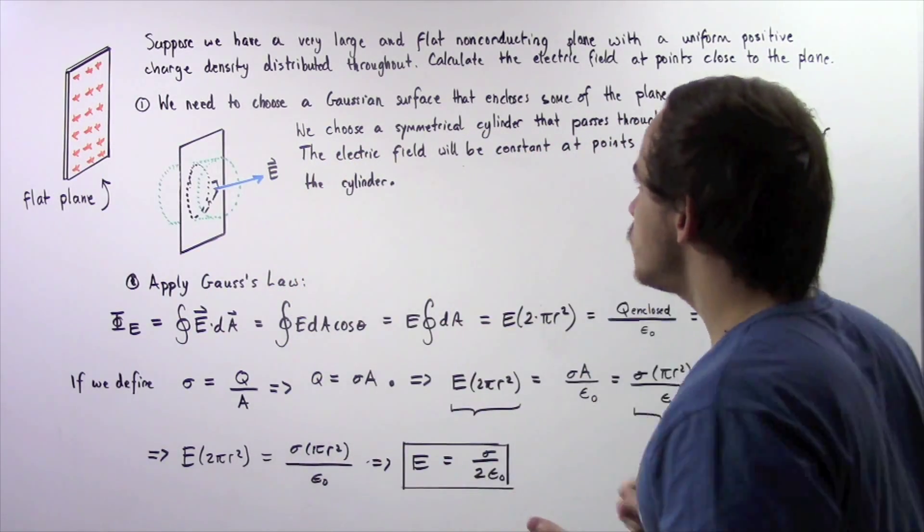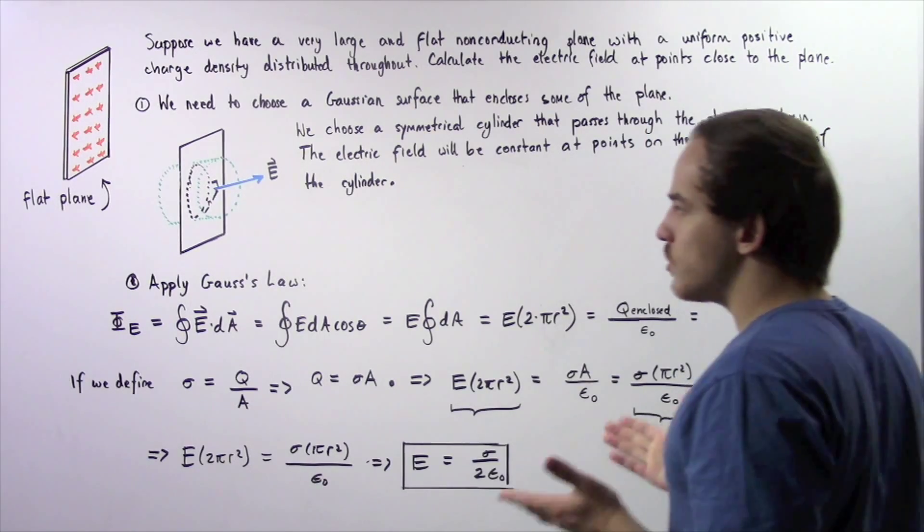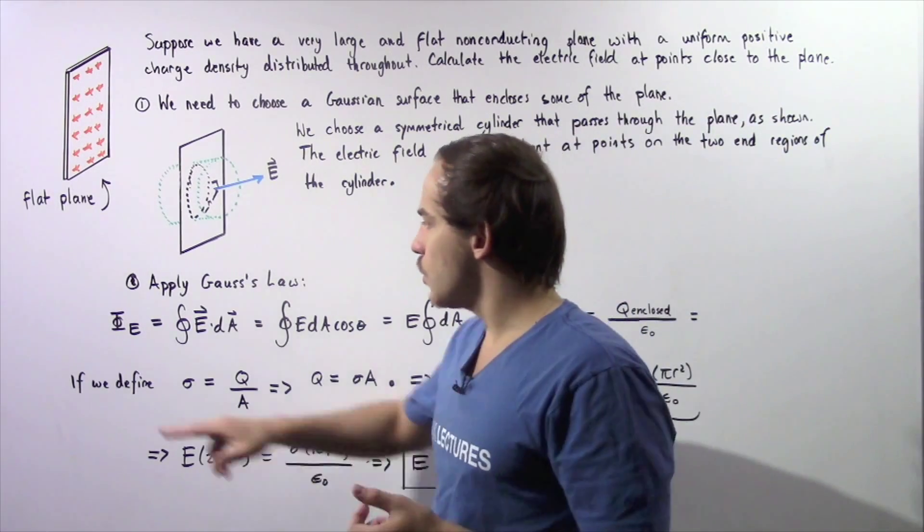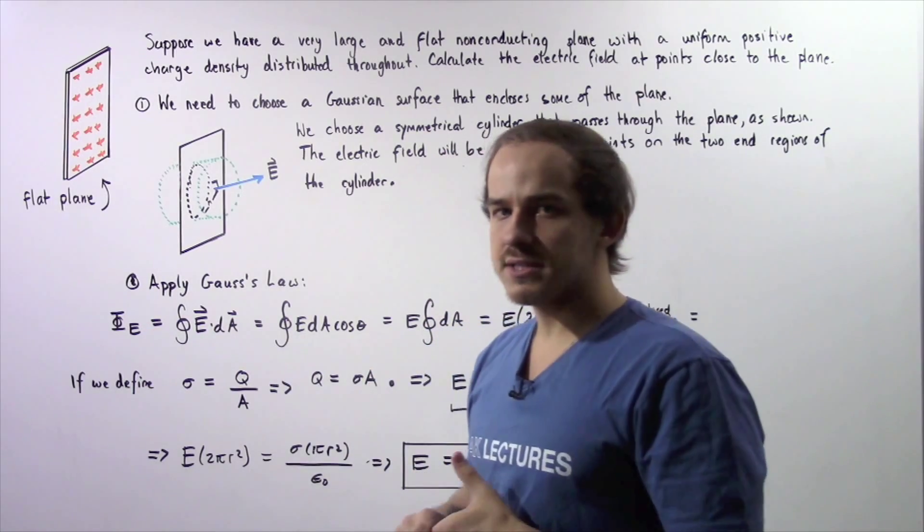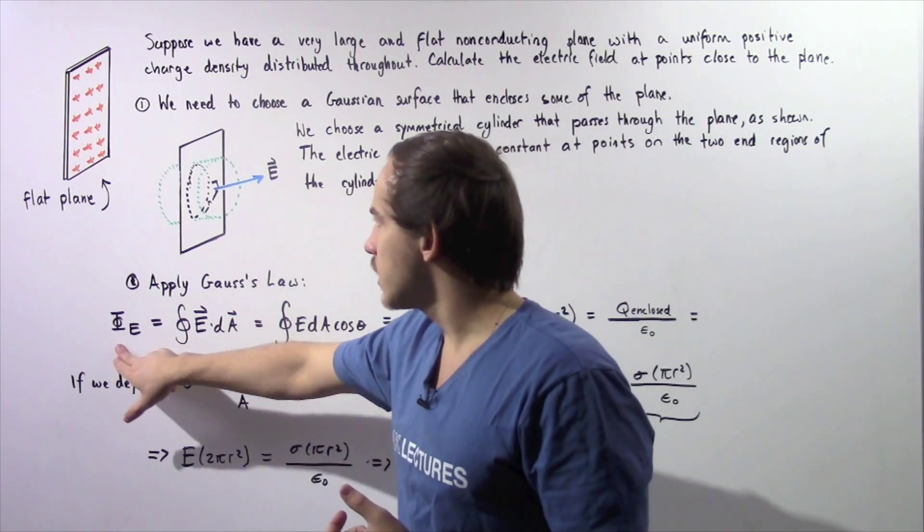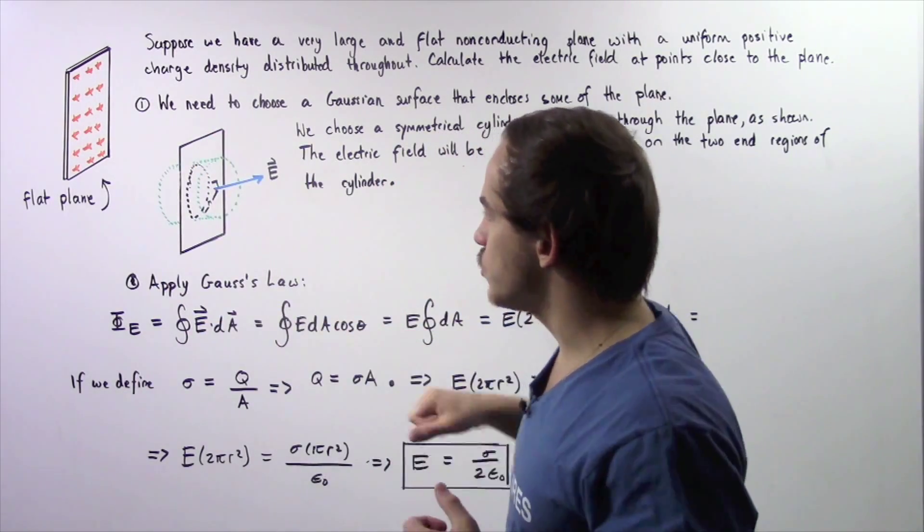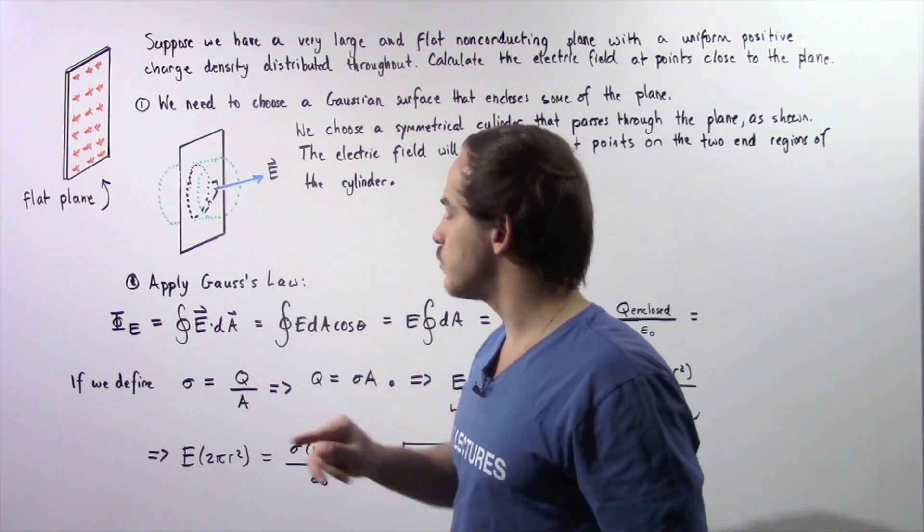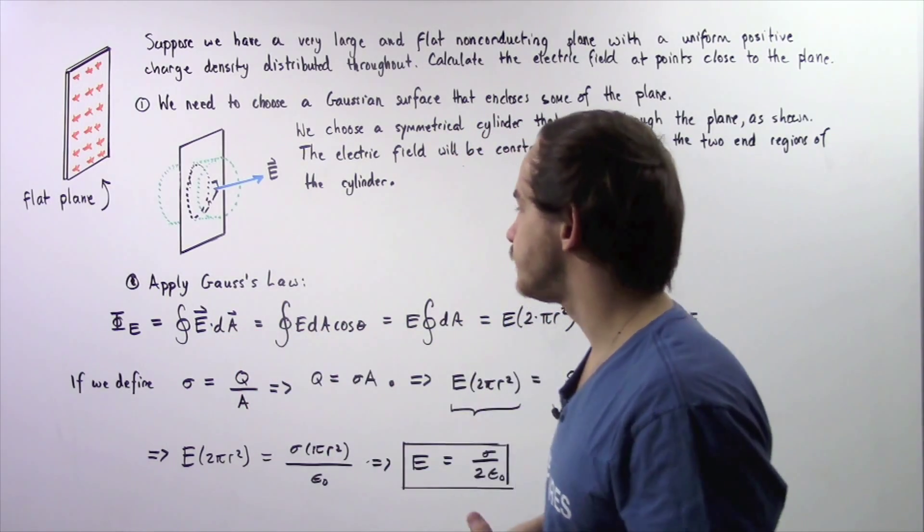Since we chose our Gaussian surface, now we're ready to apply Gauss's law. Gauss's law states that the net electric flux through our region is equal to the closed integral of the dot product E dA.